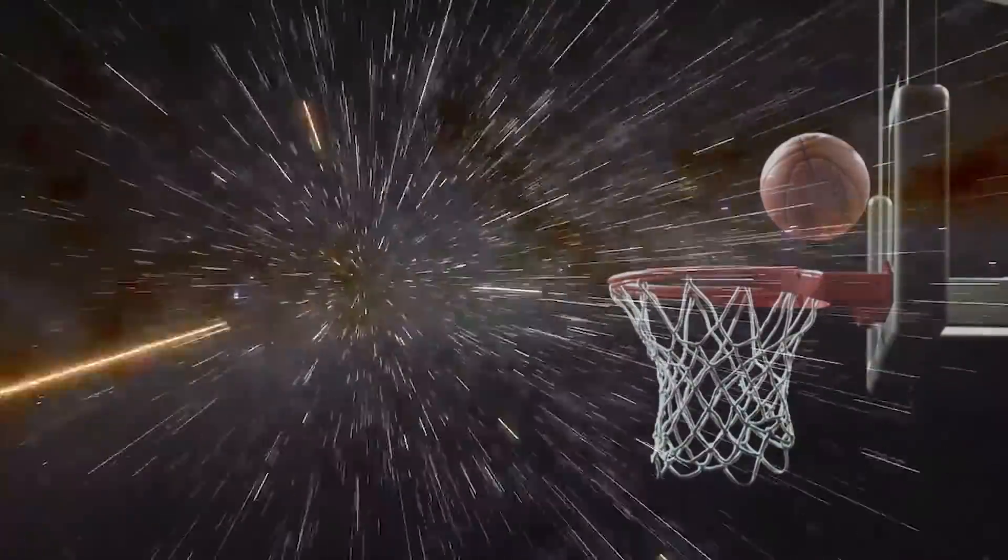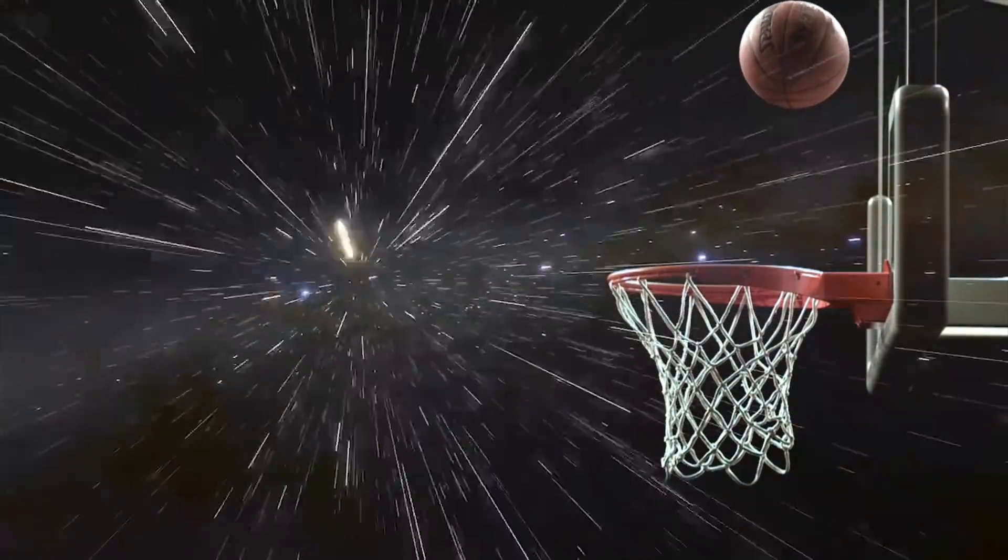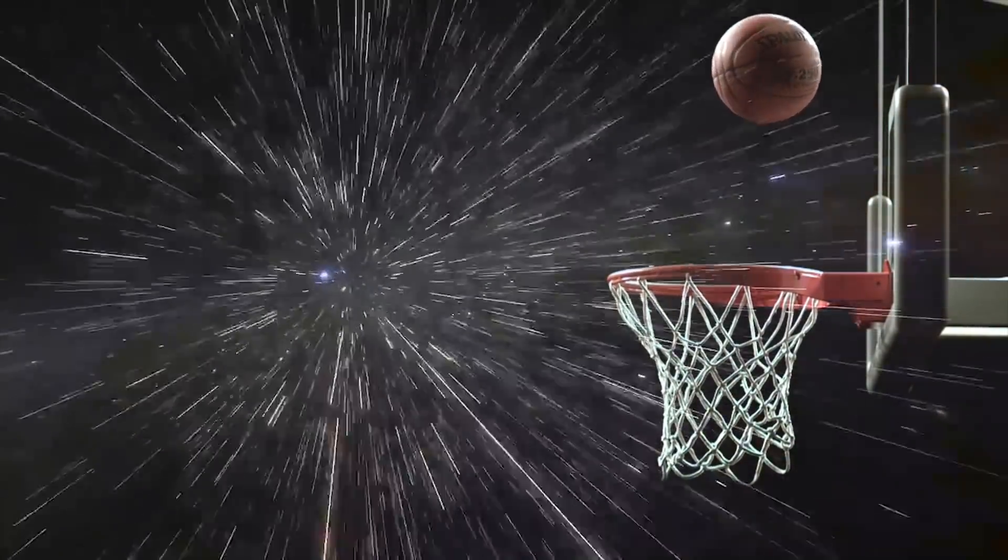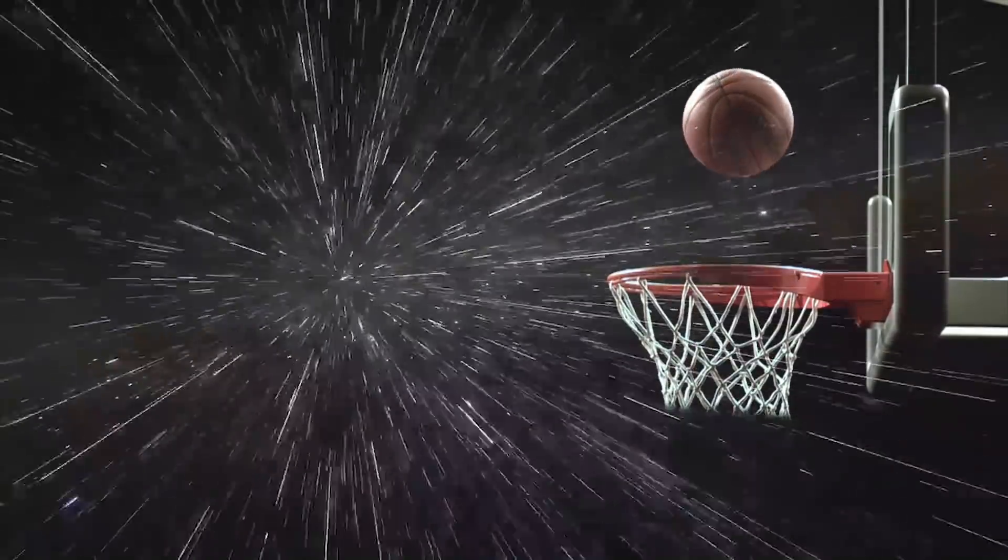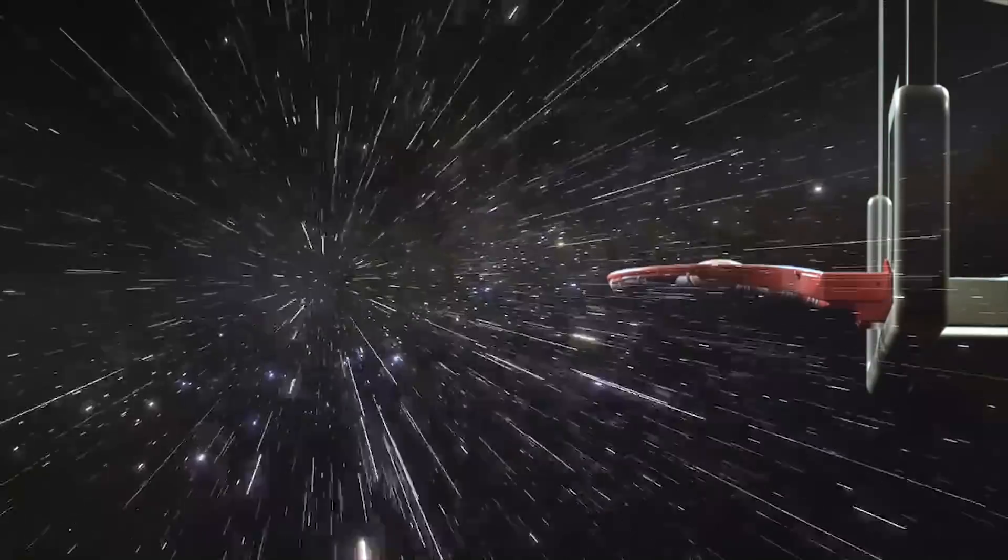This analog was used. Imagine a basketball hoop. The ring is the event horizon and the net is where all matter falls and disappears. Now push the net up to the ring to make it a flat two-dimensional surface. There is no inside and there is no other side.